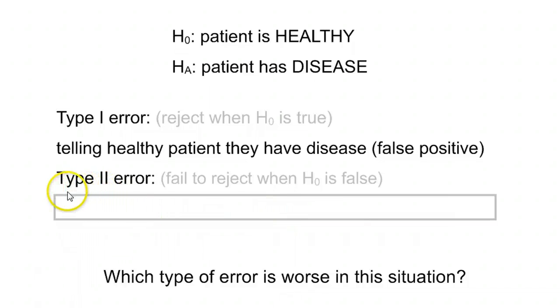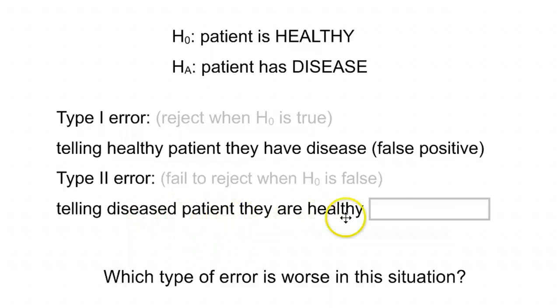Call that a false positive in most medical situations. The alternative, though, is actually a lot worse. When you fail to reject and the null is false. So, let's say the alternative is true. The patient has a disease and you make a mistake. You tell them they're healthy. So, telling that diseased patient that they are healthy, a false negative, in this case, is far worse.